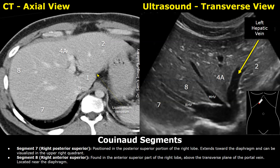In the CT image, segment 7 is behind segment 8 on the superior aspect of the liver. Both segments 7 and 8 are in contact with the diaphragm. Segments 2 and 4a are at the superior aspect of the liver. Segment 7 is the posterior superior portion of the right lobe, and segment 8 is the anterior superior part of the right lobe.